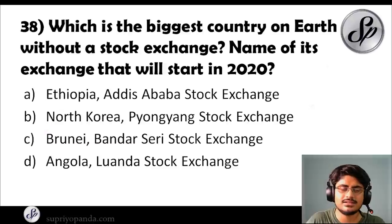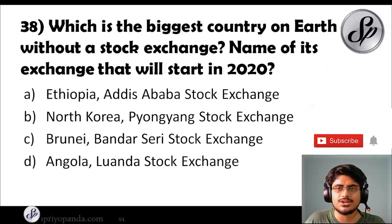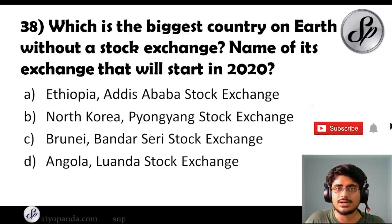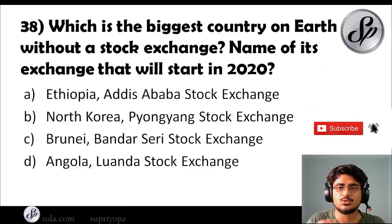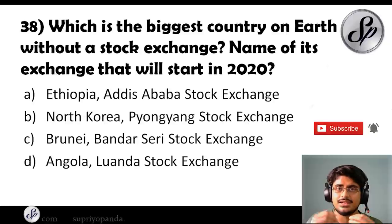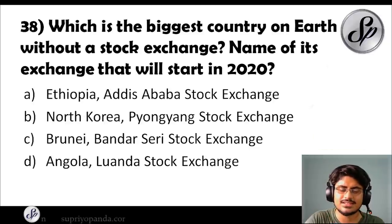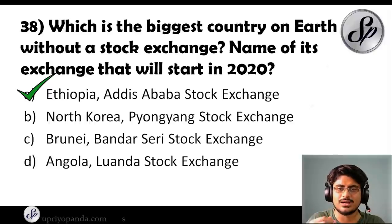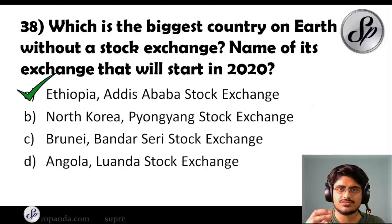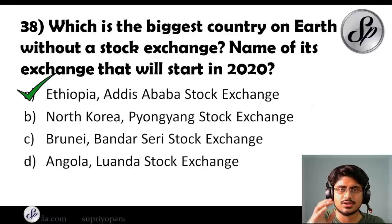Question thirty-eight: which is the biggest country on Earth without a stock exchange, and name the stock exchange it will start in 2020? The answer is Ethiopia. The stock exchange's name is going to be the Addis Ababa Stock Exchange. Ethiopia was one of the biggest countries on earth without a stock exchange, and now they will be getting one.